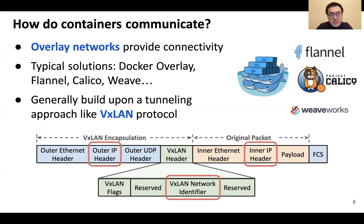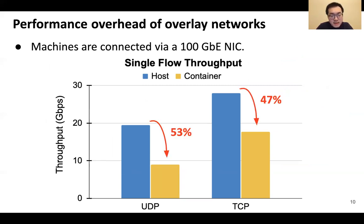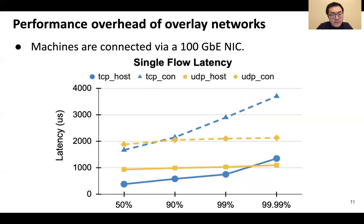Actually, the packets are routed through the underlying public network with the host IP address. So what is the overhead of this kind of complicated packet encapsulation? Let me show some data. We were motivated by single flow performance tests. Our two machines are directly connected via a 100 gigabit network card. Comparing to the host network, container overlay networks drop by 53% and 47% for UDP and TCP separately in throughput. For single flow latency tests, container overlay networks increase by at least two times for UDP and three times for TCP.